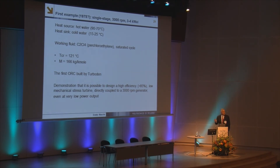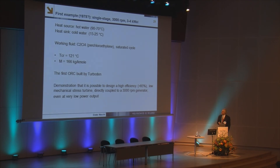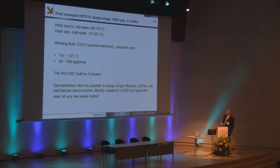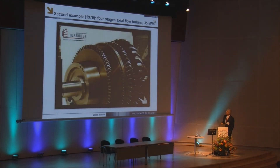We used the fluid perchloroethylene. At that time, this fluid was fully compatible with the environment, though right now it is not a recommended fluid. This turbine was really successful and was the starting point for all the history of Italian organic Rankine cycle — from three kilowatts, they went to much higher.